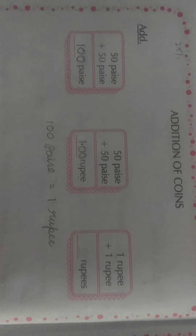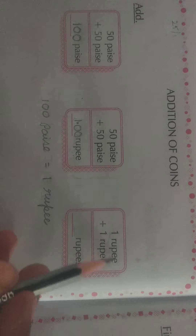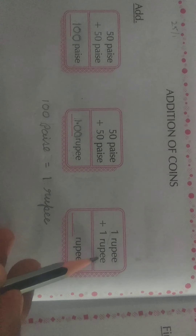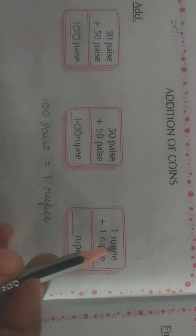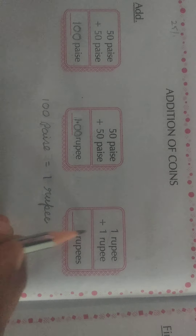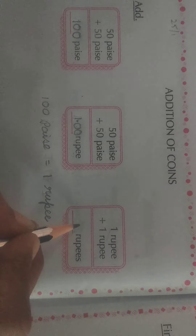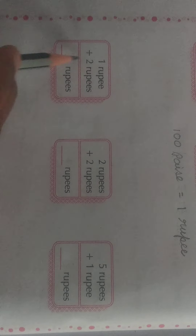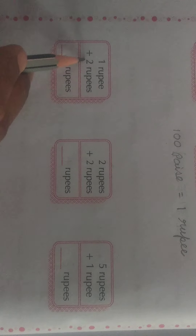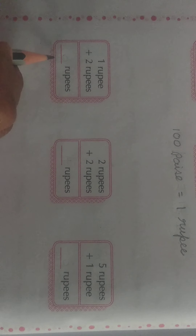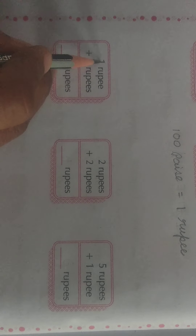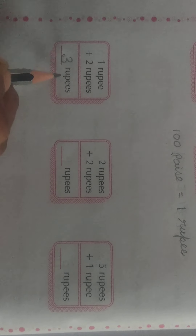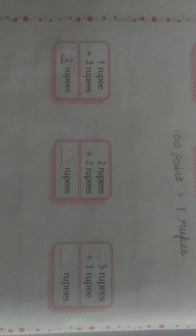And next one — 1 rupee plus 1 rupee. Here we count rupees: 1 rupee plus 1 rupee equal to 1 plus 1 is 2, so 2 rupees. Okay, and next sum — 1 rupee plus 2 rupees is equal to what? What is the answer? 1 plus 2 is equal to 3. The answer is 3 rupees.